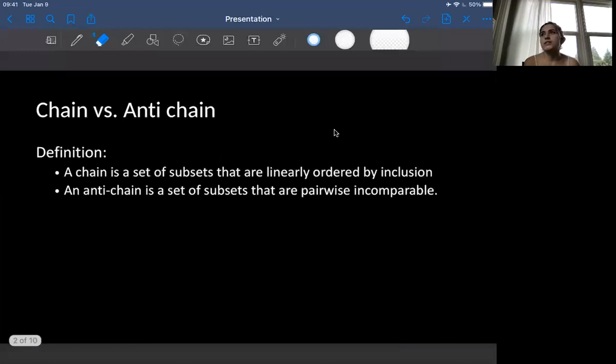The very first thing that we need to consider when trying to explore this theorem is a chain versus anti-chain. So by definition, a chain is a set of subsets that are linearly ordered by inclusion, whereas an anti-chain is a set of subsets that are pairwise incomparable.